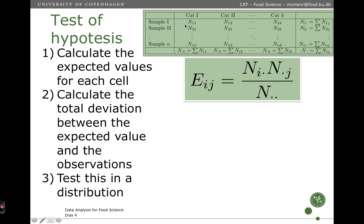We multiply the row sum by the column sum and then divide it by the total sum. We do that for all the individual cells in this matrix. That's the expected value.